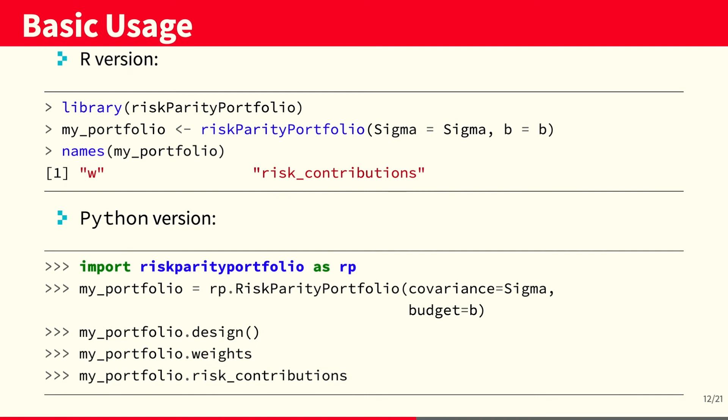In Python, we would import the library and then create an object from the risk parity portfolio class where we pass as attributes the covariance matrix and the budget vector. Then we can use the method design and then we can retrieve the weights and the risk contributions of the portfolio.